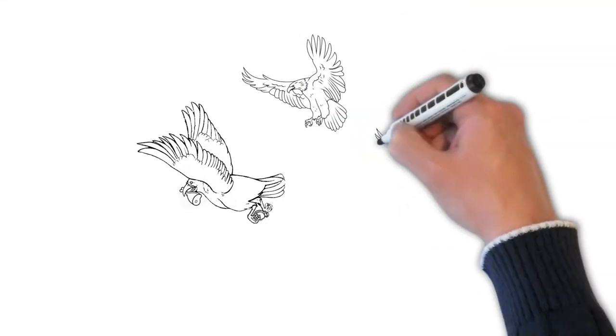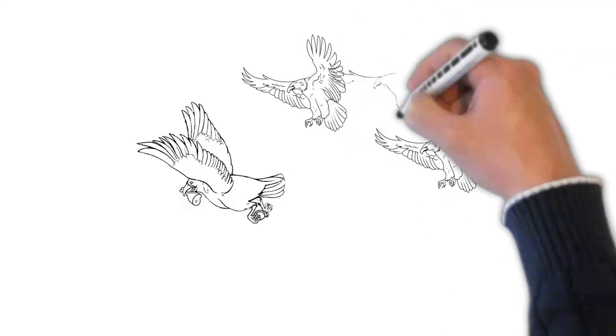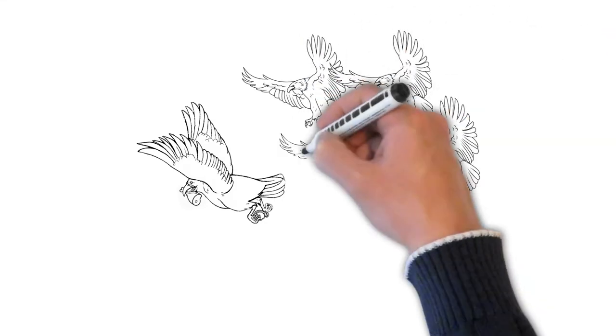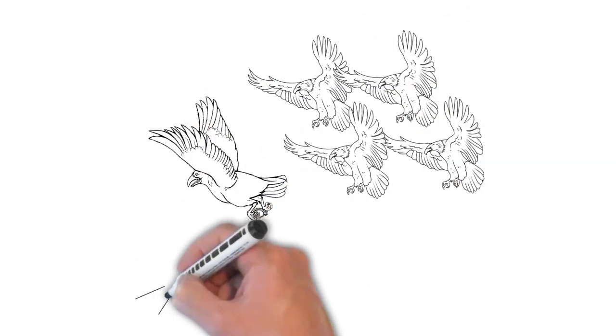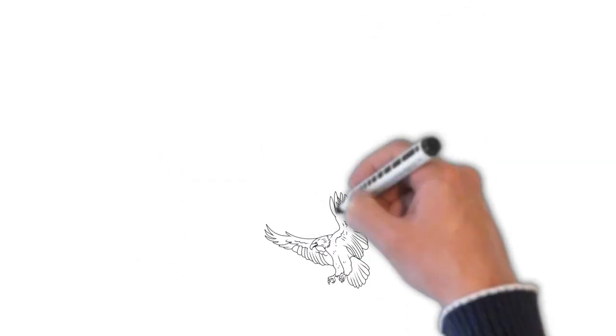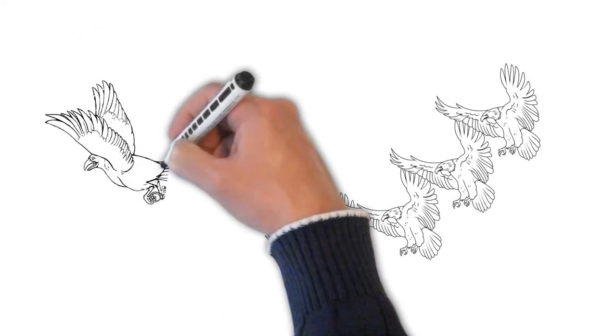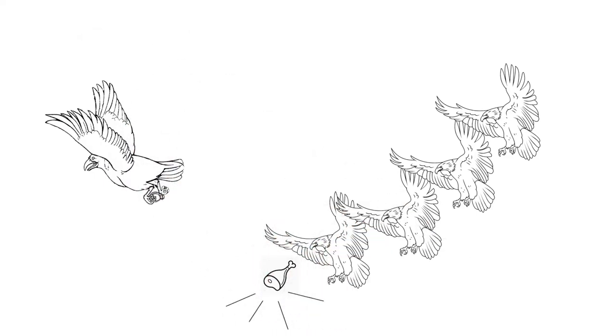When they moved further, they found a crow being chased by many eagles as it was holding a big piece of meat in its beak. Suddenly, the meat piece fell from its mouth and all the eagles left the crow and went for that meat piece.